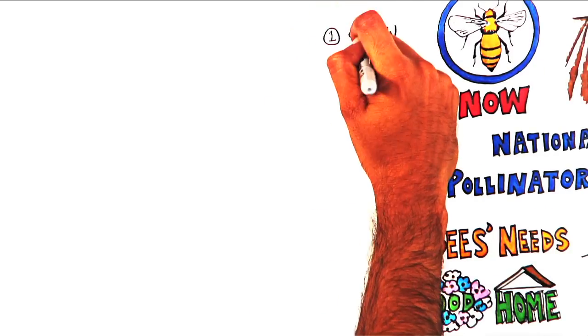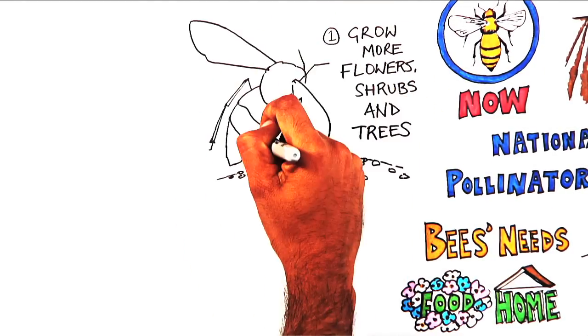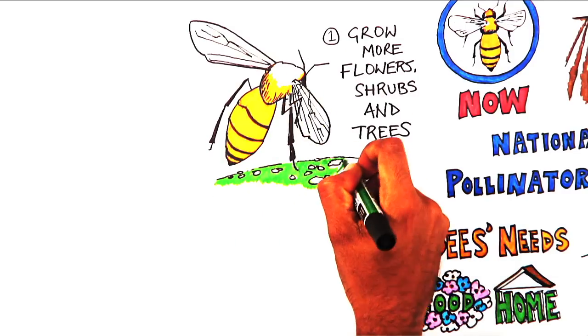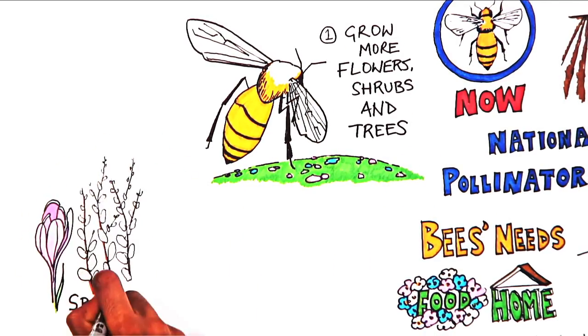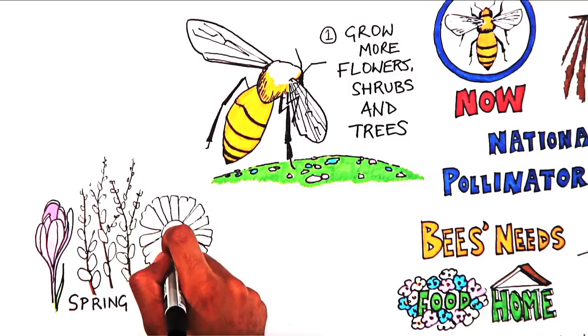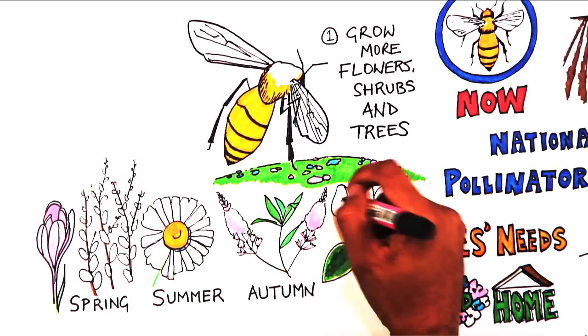1. Grow more flowers, shrubs, and trees that provide nectar and pollen as food for bees and other pollinators throughout the year, such as crocuses and pussy willow for the spring, ox-eye daisies for the summer, hebes for the autumn, and cyclamen in winter.